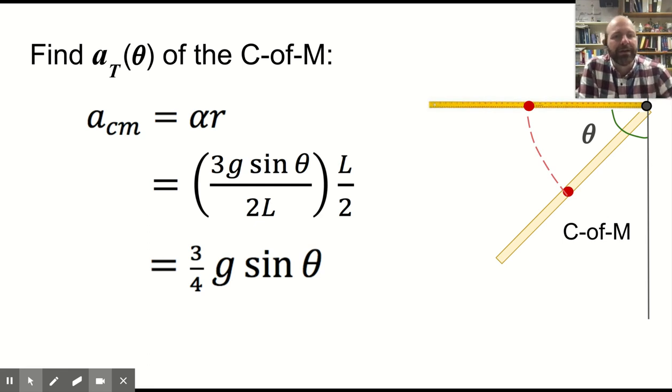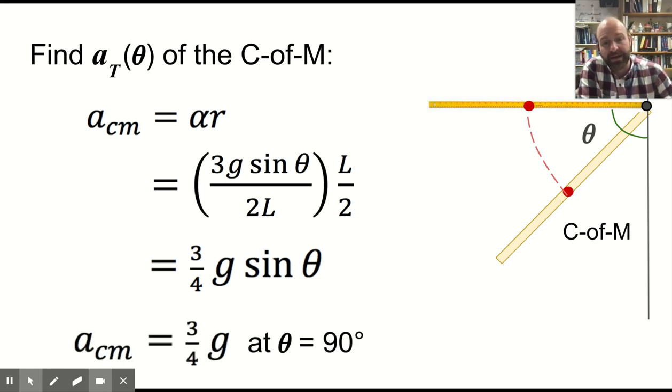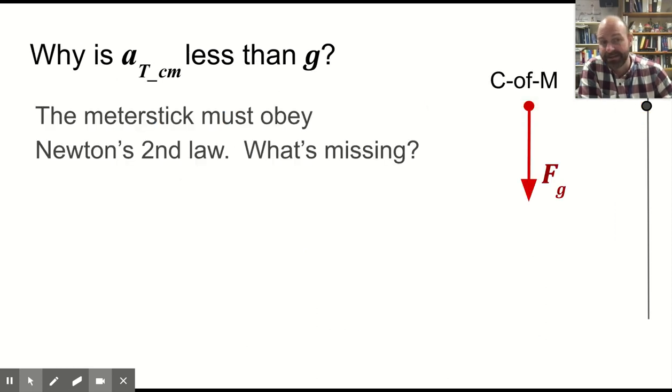So somewhere between the middle and the end is where the acceleration of the meter stick is the same as g. And again, that's maximum at 90 degrees. And so why is the acceleration of the center of mass less than g?